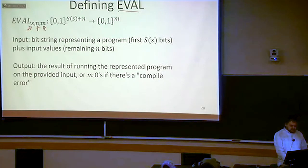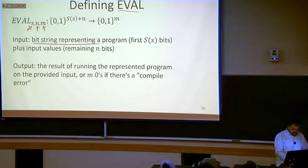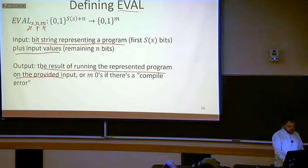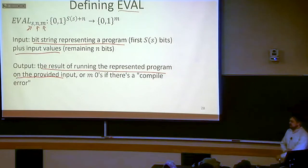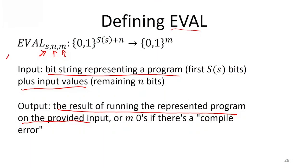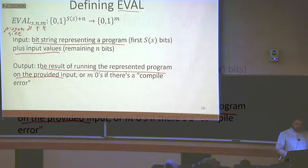In this case, essentially what eval is going to be doing is we're going to give it as input a string representing a program plus the input values. Its output is going to be the result of running the represented program on that input. We hand it the program and the input, and it gives us what that program would return. This S represents the program size. No matter what your program length is, we can find a function that's going to work for that.